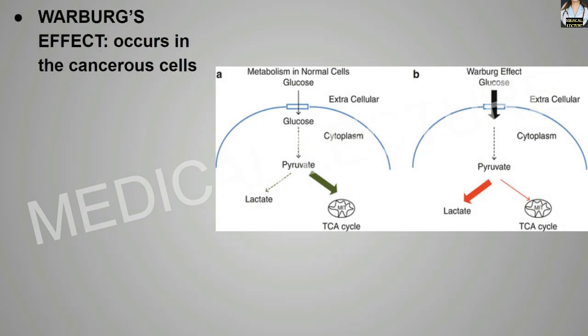First of all, the Warburg effect. As you can see in this figure, in normal metabolism, glucose enters inside the cytoplasm, converts into pyruvic acid, and most of the pyruvic acid goes into the TCA cycle by way of acetyl-CoA.